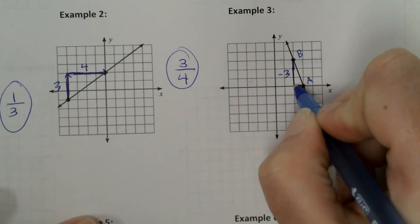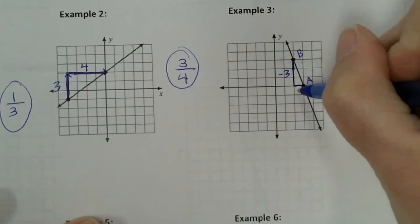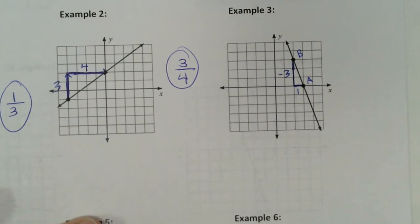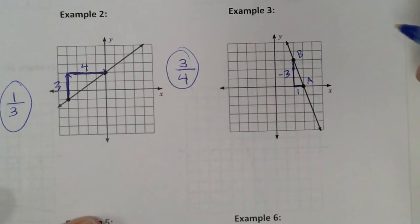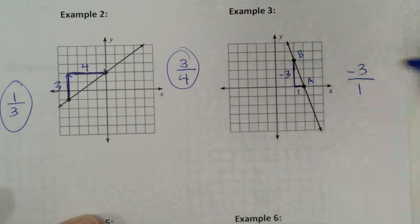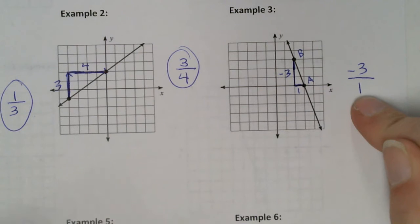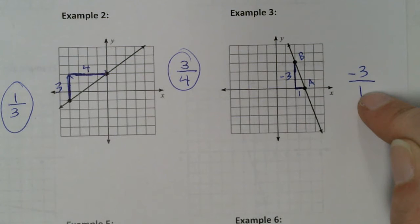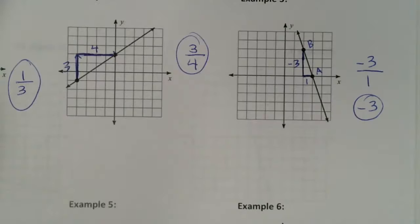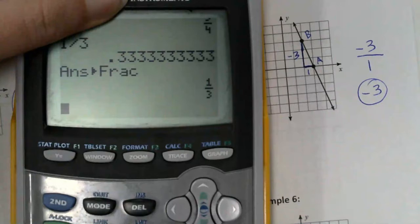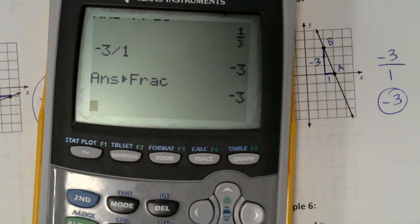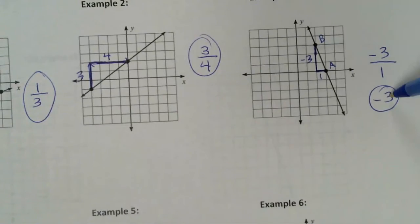So down three, and then how far do we run? One. Because we always run to the right — that's positive. The run is always going to be positive. So we rise negative three — that goes on top. We run one. Type this in the calculator. What's negative three divided by one? Negative three. If you do math, enter, enter, it still gives you negative three. So the slope of this line is negative three.